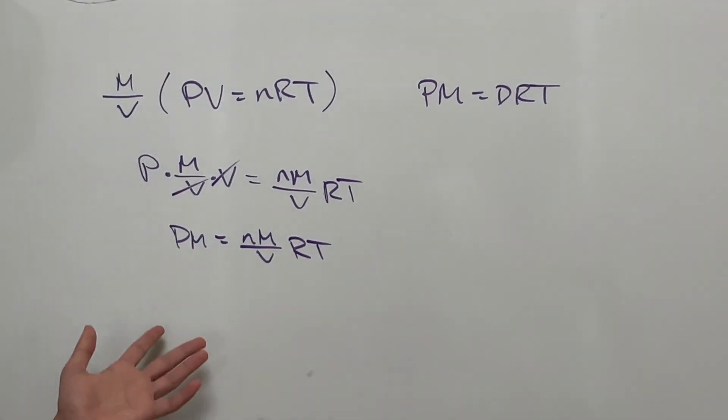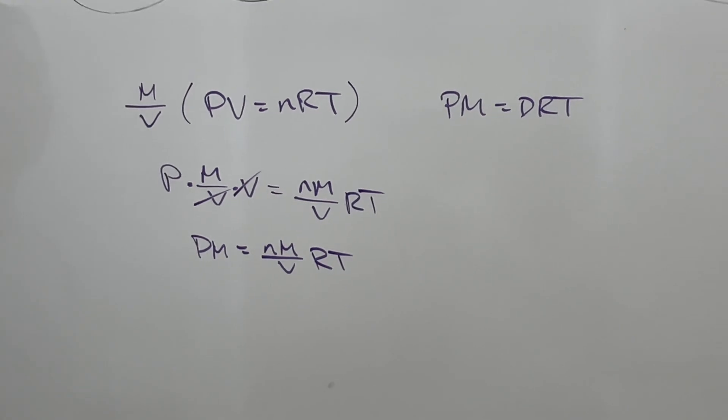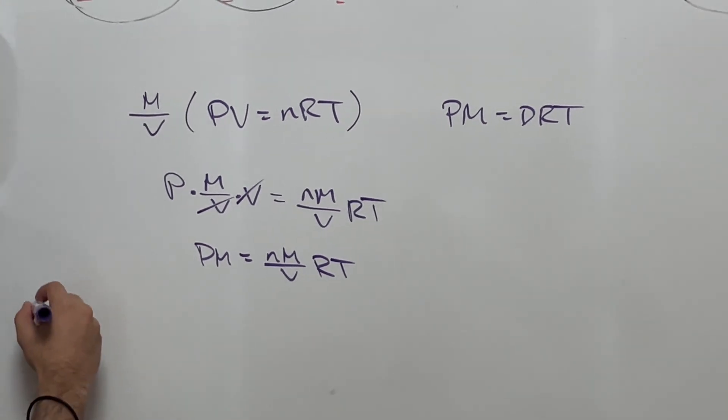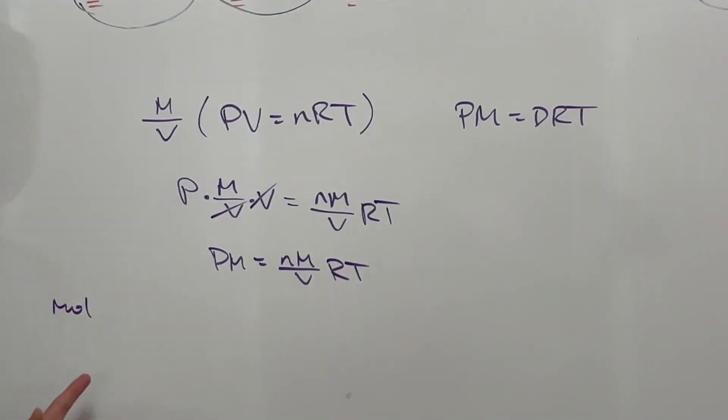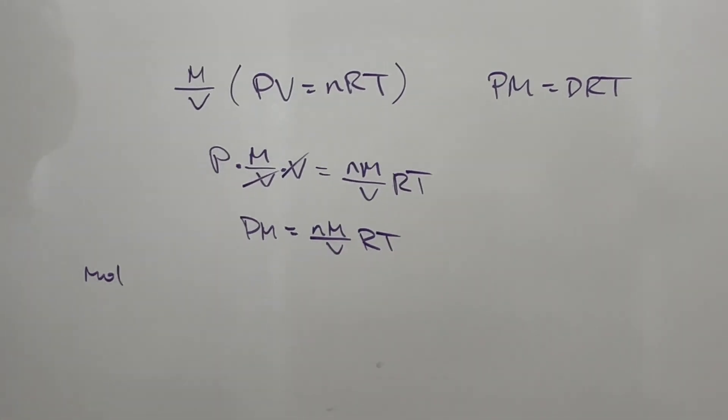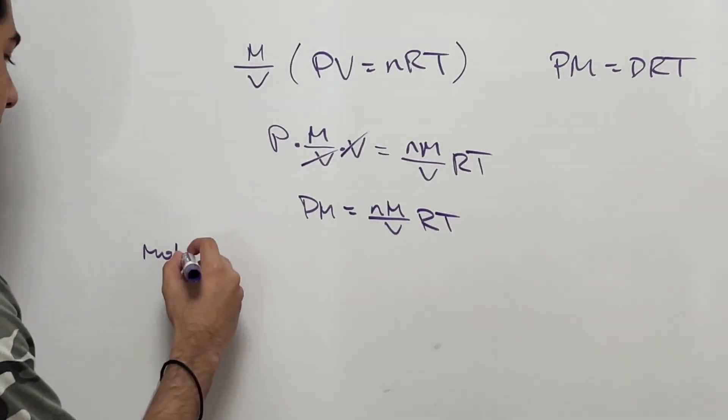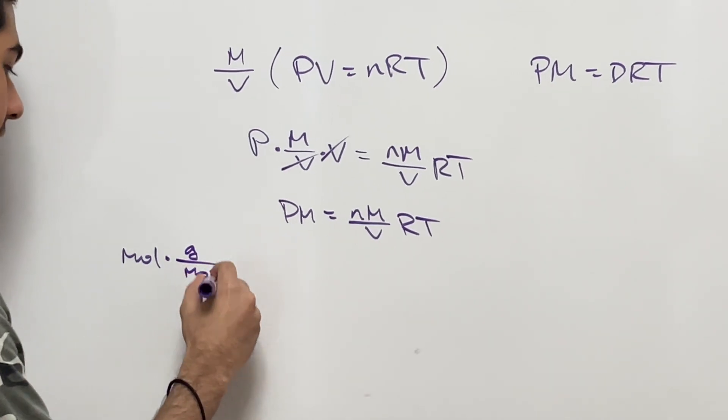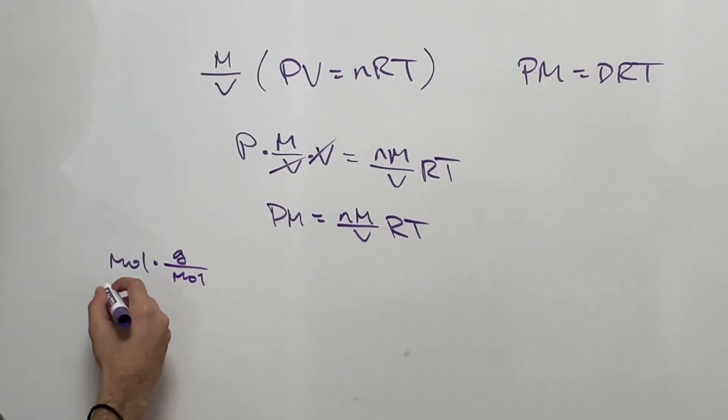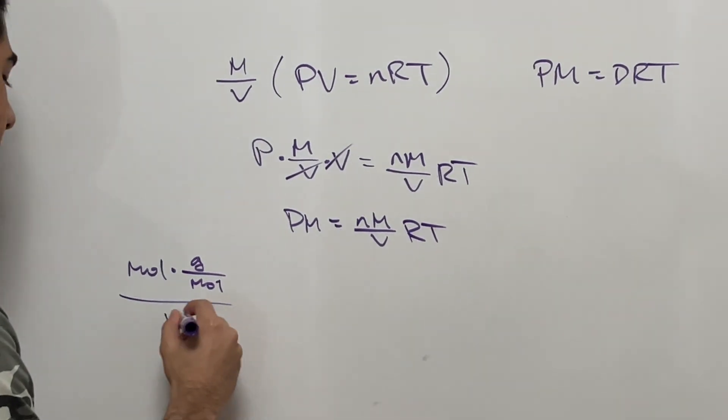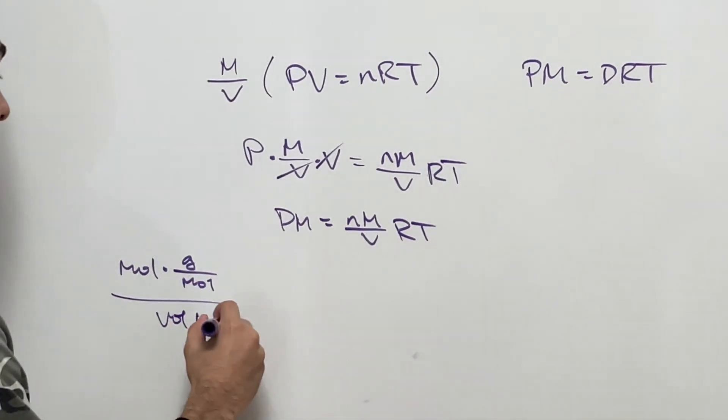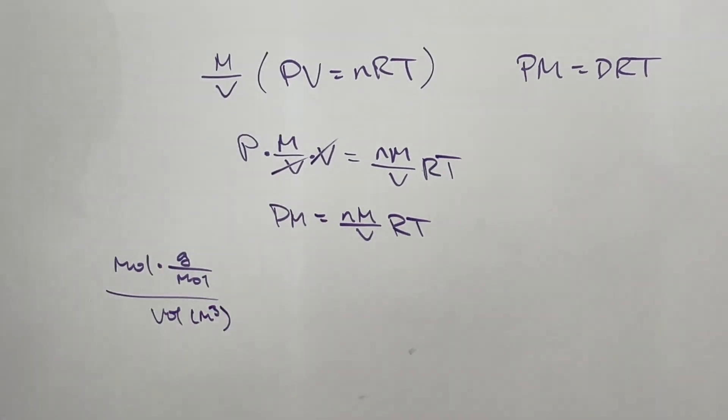Let's think about this. We have moles, so we have moles, times molar mass - some grams per mole - and then we're dividing by some volume, like maybe meters cubed or something like that.